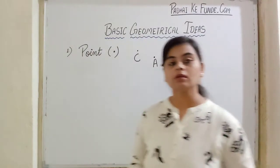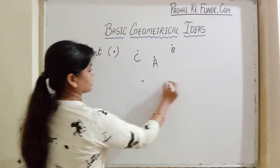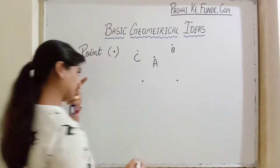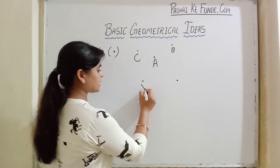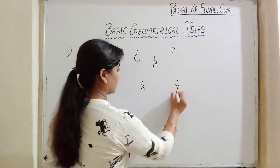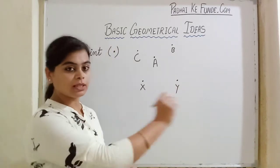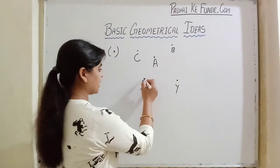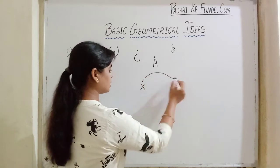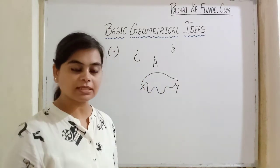Secondly, we talk about if we have two points. If we have two distinct points, let us name them as X and Y. If we join these two points, we can join them in many ways - like if I join them in a curve, like this also. So anyhow these two points can be joined.